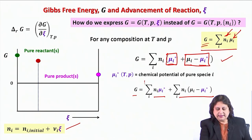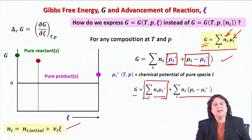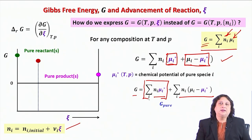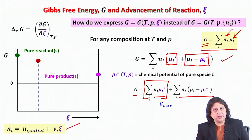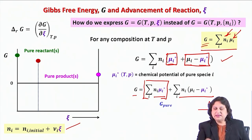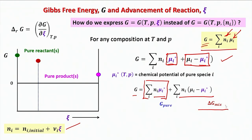G will have a part dependent on the chemical potential of the pure species under the given condition of temperature and pressure, plus another quantity that depends on μi and also on μi*. Closely looking at this term, this is nothing but G_pure, where I have only the pure phases coexisting at temperature T and P. The next term is nothing but ΔG_mixing — the change in Gibbs free energy if you had the reactants and products in that composition and simply mixed them, as we already saw when talking about mixing of ideal gases.